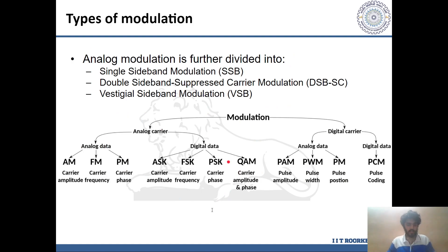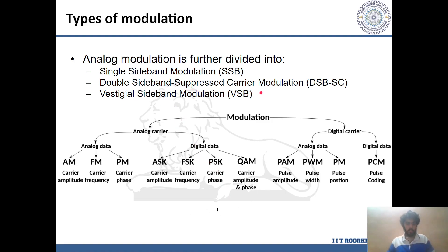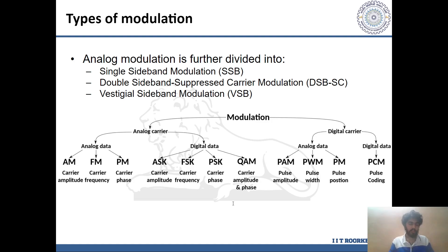Depending on the type of message signal, modulation can be classified as analog and digital, which can further be classified as continuous wave and pulse modulation for analog signals. AM, or amplitude modulation, is a type of analog modulation where the amplitude of the carrier wave is varied according to the message signal. AM is further classified into DSBSC — double sideband suppressed carrier modulation — where the carrier level is ideally completely suppressed; SSB or single sideband modulation, where only one sideband is suppressed; and VSB or vestigial sideband modulation, where the carrier is suppressed and power is distributed equally to the two sidebands.